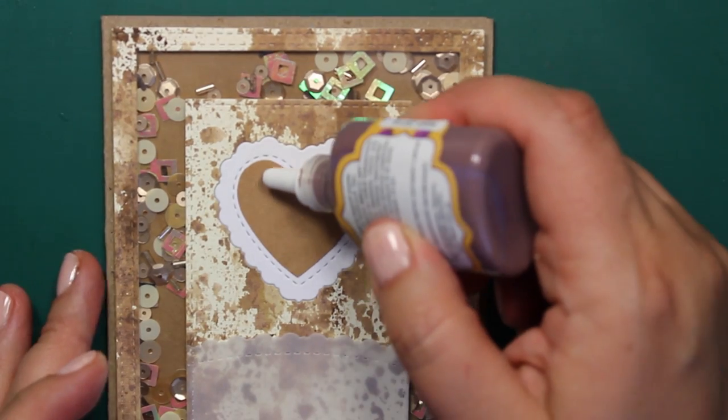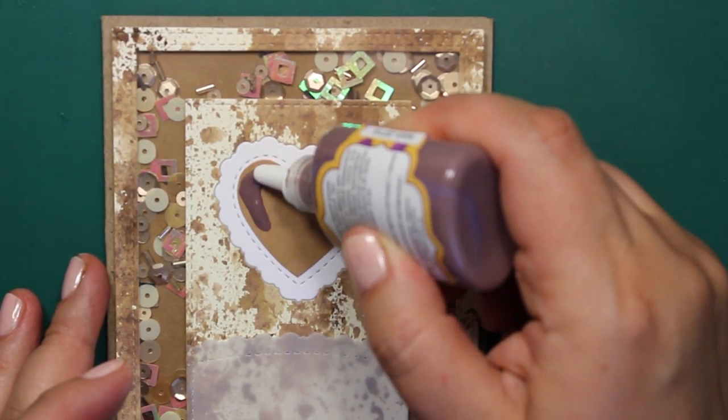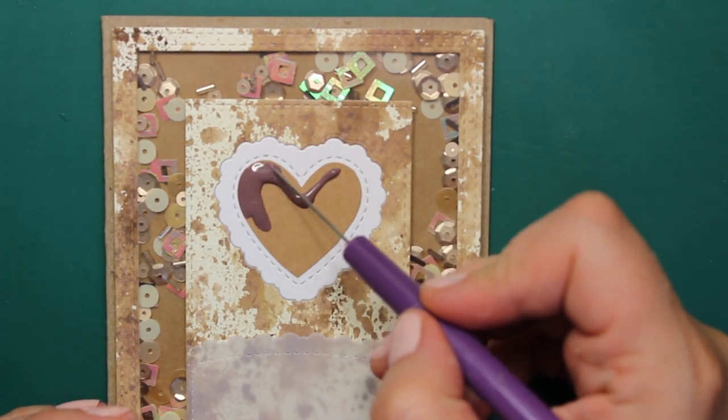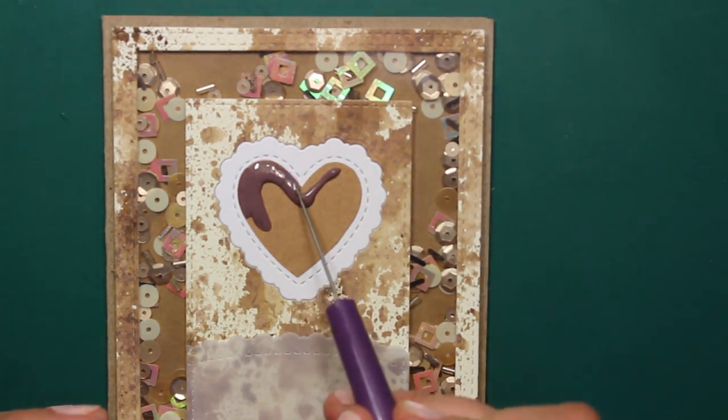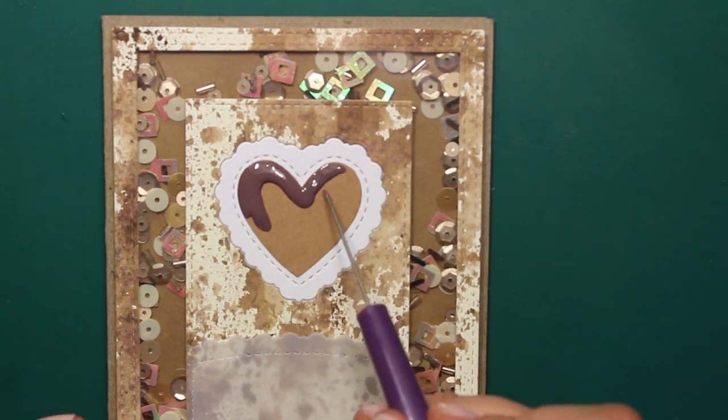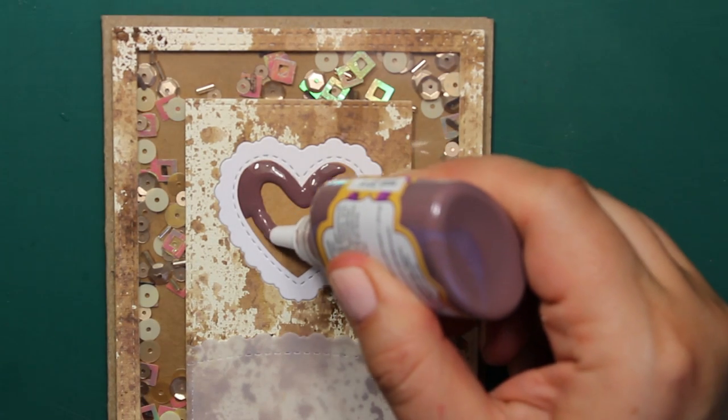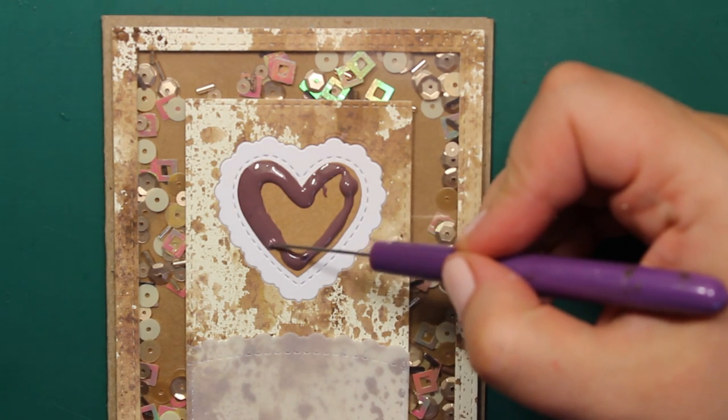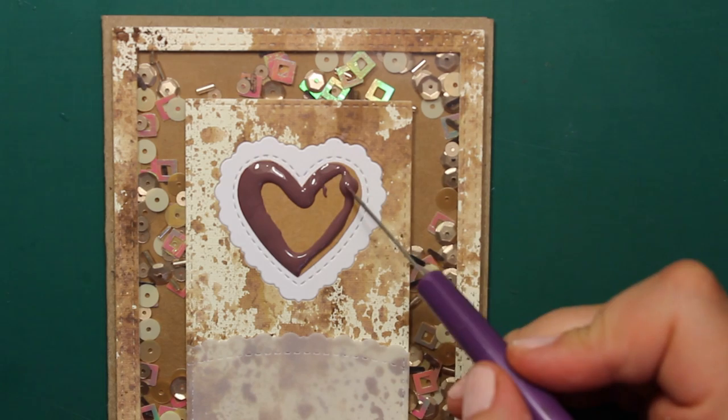This medium is liquid enamel dots by Fabrica Decoru. The color is called Strong Coffee. I'm squeezing a generous amount of that medium onto the heart and with a needle tool I'm spreading it until it touches the edges of cardstock. It's important to take your time and not spill it over the edge.